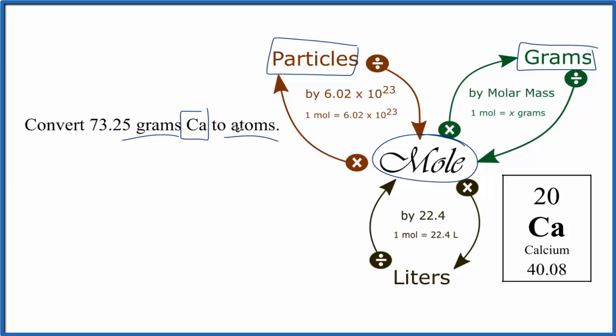So we're going to take the grams of calcium atoms at 73.25, and this is just a number I made up, could really be any number. We're going to take that, divide by the molar mass. That'll get moles. We'll take the moles and multiply by Avogadro's number. That'll give us particles, which are atoms, molecules, or ions, for example.